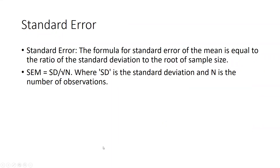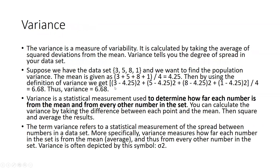Standard error means the formula for the standard error of the mean is equal to the ratio of the standard deviation to the square root of the sample size: SE = SD / √n, where SD is standard deviation and n is the number of observations.